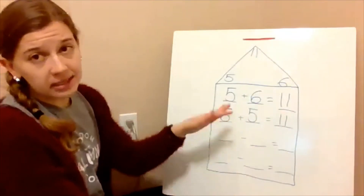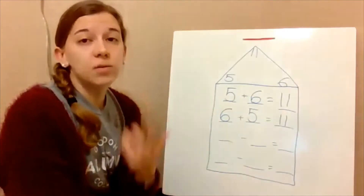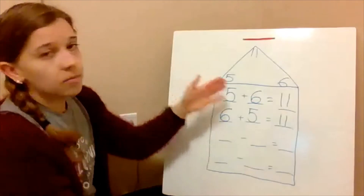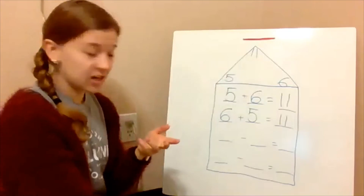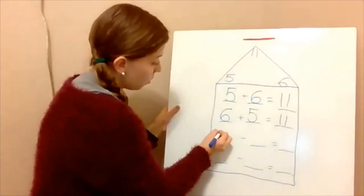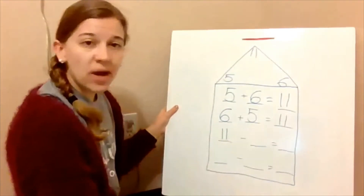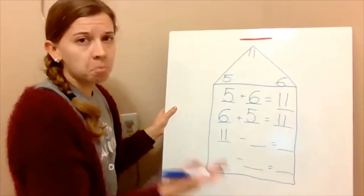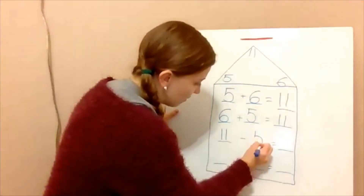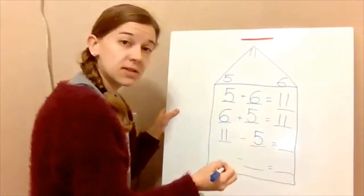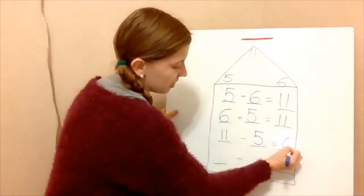Now we get to subtraction, which gets a little bit trickier. Remember, with subtraction you want to start with the number that equals the most. Out of five, six, or eleven, the highest number is eleven. So we'll start with eleven minus five. Eleven minus five equals six — if you have eleven and you take away five, you end up with six.